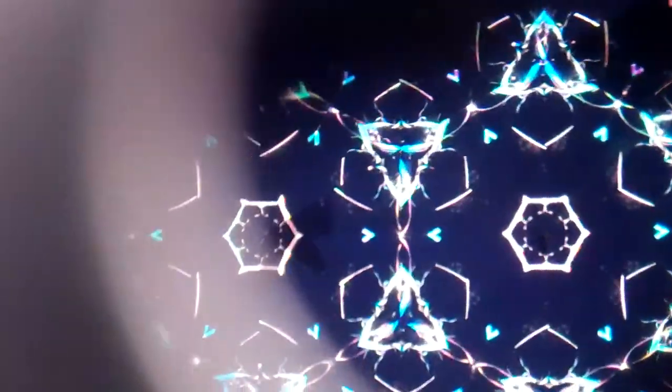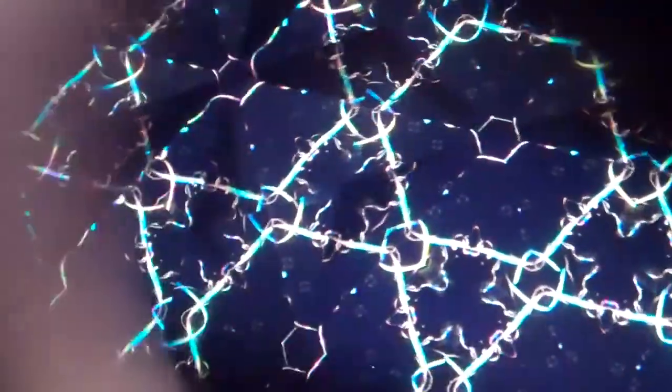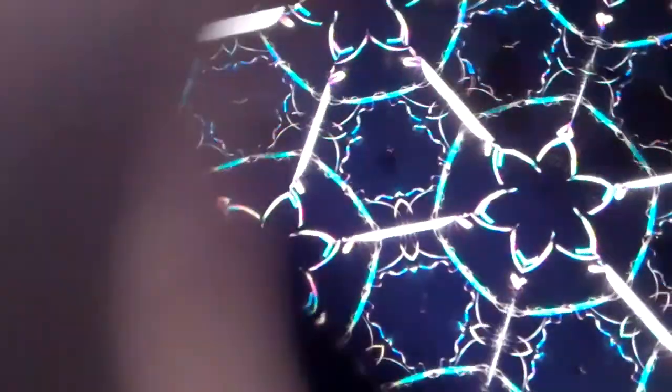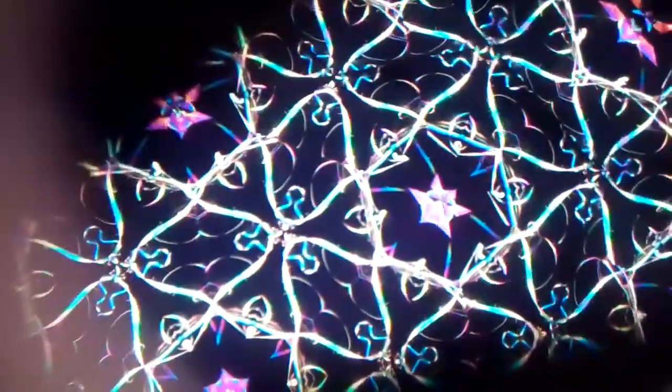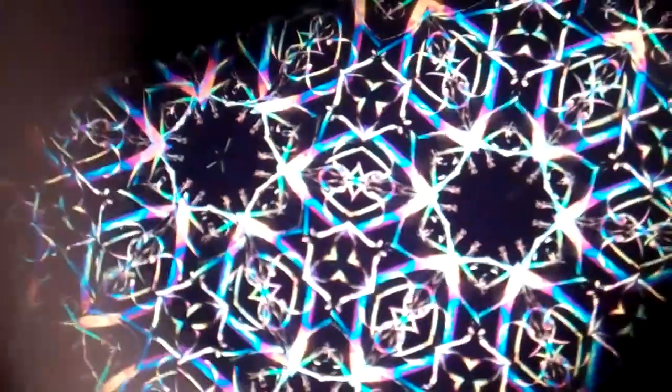This is an incredible pattern within this Tomo Hosono 3 mirror kaleidoscope. We have nicknamed this mirror system space as this beautiful 6 point star seems to be repeating endlessly as in the infinity of space.